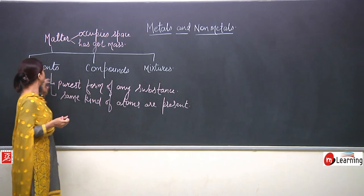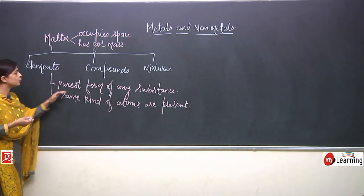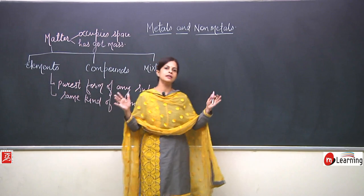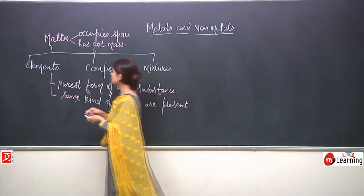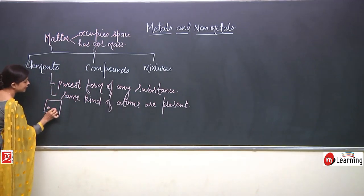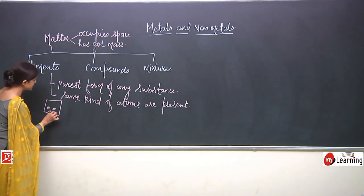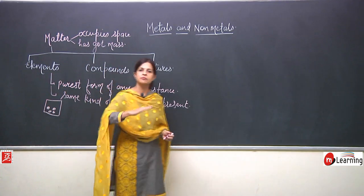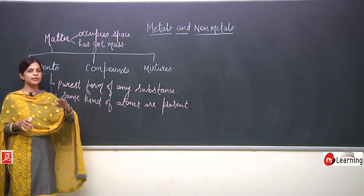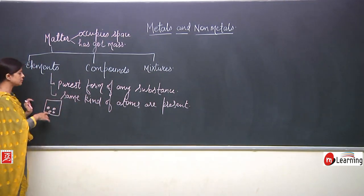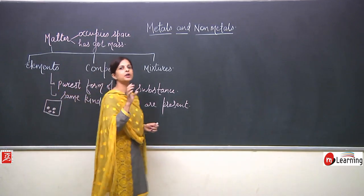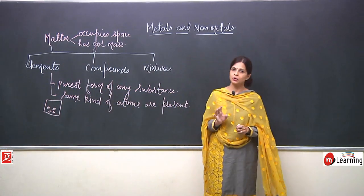To explain further — when I say elements are the purest form of any substance and made up of the same kind of atoms — if you take a big piece of an element and break it down into smaller pieces, there will be no change in the characteristic features of the atoms. That means only one kind of atom is present in any element.